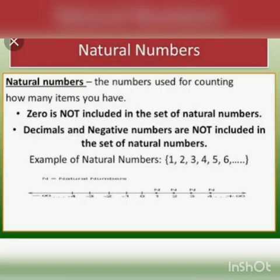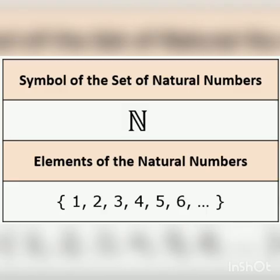Natural numbers are used for counting how many items you have. 0 is not included in the set of natural numbers. So, 1, 2, 3, 4, 5, 6, etc. are called natural numbers. Natural numbers are denoted by the letter N, and the elements start from 1, 2, 3, 4, 5, 6, etc.